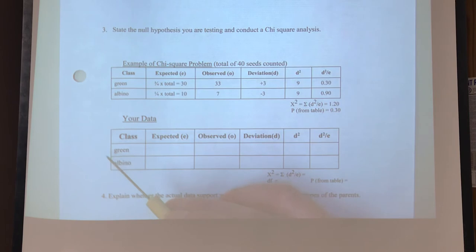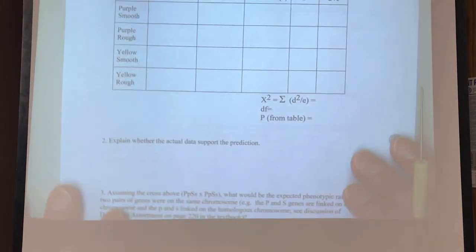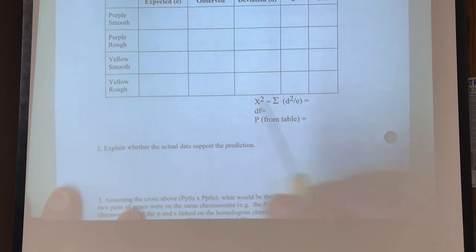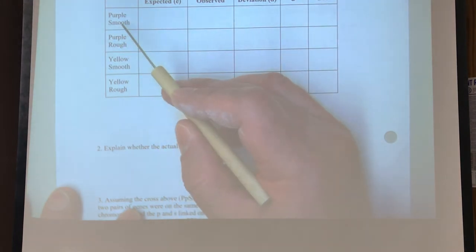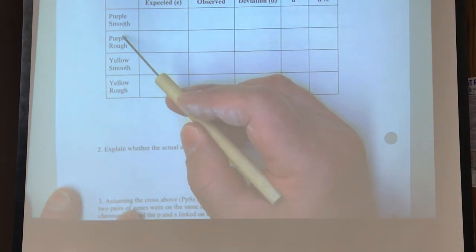And what I would suggest to you is to write on the side over here what your expectants will be. Okay, now if we go to the next page over here, we see over here that this is the dihybrid cross.